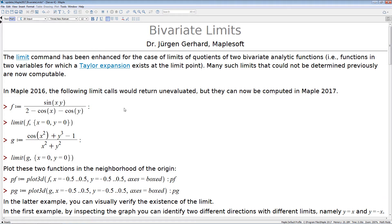Limits of bivariate functions or functions in more than two variables even are tasks that often occur in second and third year calculus at university, and often the methods used to calculate those limits seem to be very ad hoc. Now in Maple we have a systematic way of computing such limits.